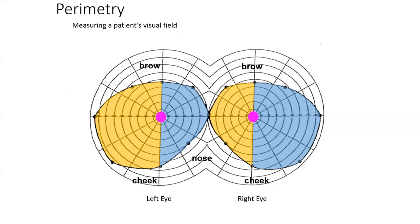The macula actually corresponds with the fovea centralis and the macula lutea. In addition to that, we have our blind spot, which is lateral to the macula, and this corresponds with the optic disc in the retina — that is where the optic nerve exits with the associated neurovasculature.